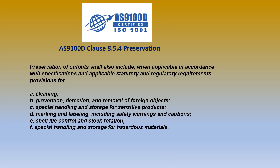Preservation of products shall also include, when applicable, in accordance with specifications and applicable statutory and regulatory requirements, provisions for: A, cleaning; B, prevention, detection, and removal of foreign objects; C, special handling and storage for sensitive products; D, marking and labeling, including safety warnings and cautions; E, shelf life control and stock rotation; and finally, F, special handling and storage for hazardous materials. On the following slides, we're going to address all of these clauses.